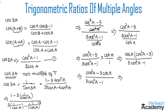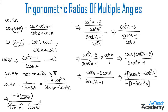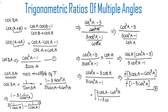Now let us take minus as a common factor. We get −(3 cot a − cot³a) / −(1 − 3 cot²a). The minus in the numerator and denominator cancel. So the formula for cot 3a is (3 cot a − cot³a) / (1 − 3 cot²a). Let us name this equation 2: cot 3a = (3 cot a − cot³a) / (1 − 3 cot²a).